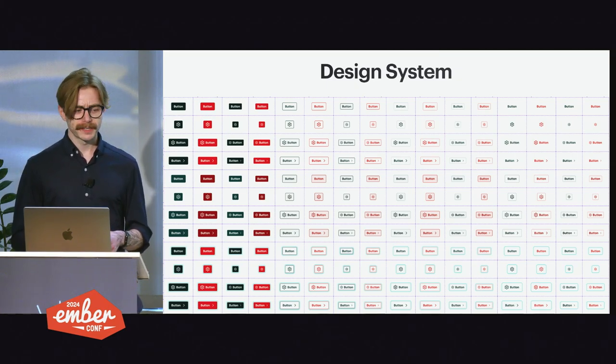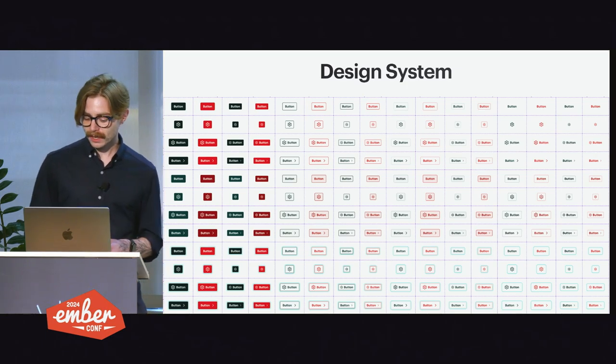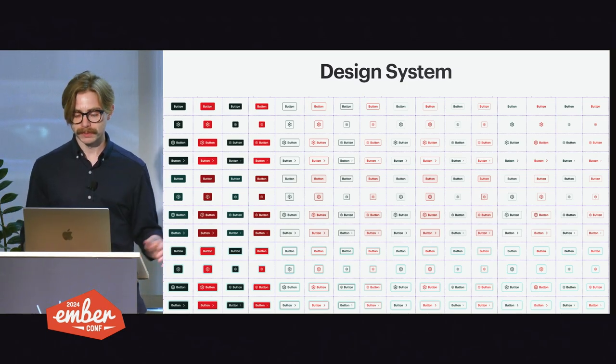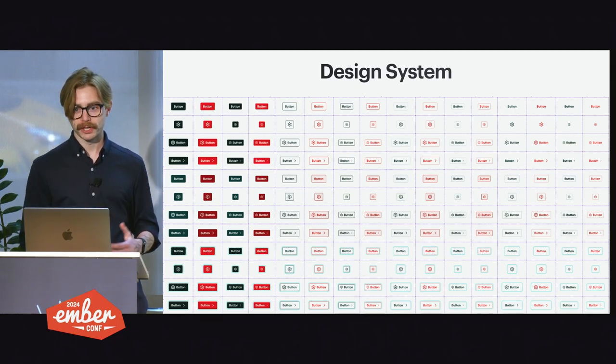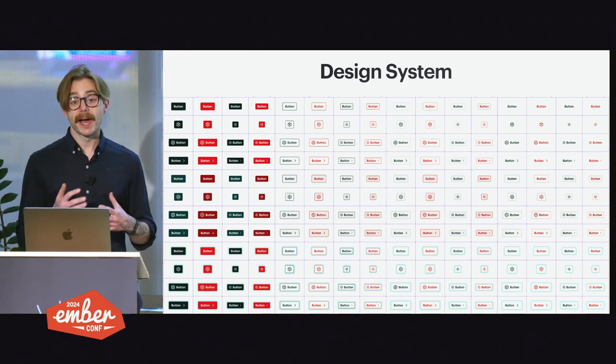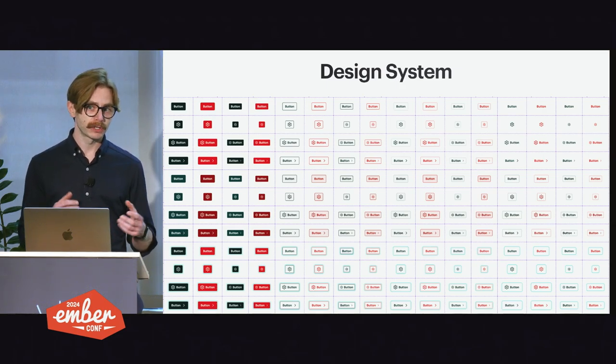Whether that was a good idea — building two systems — not sure, but I'm not going to dive into that because that would be an entirely different talk. I found myself building these components in parallel for both frameworks at the same time. My aim was to keep the component APIs as similar as possible, because I wanted our developers to still know what's happening and how to use the components when they switch between projects. On the React side I used context to provide state to the library components, but then I realized that context is not available in Ember.